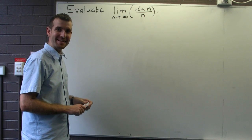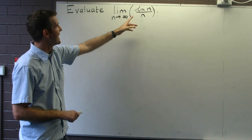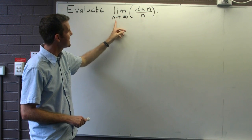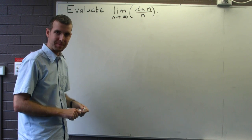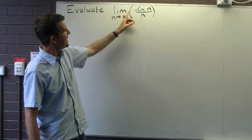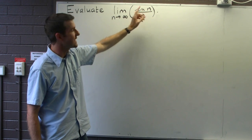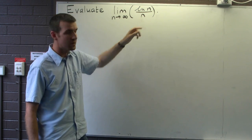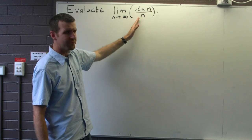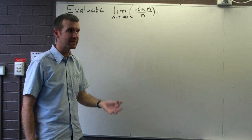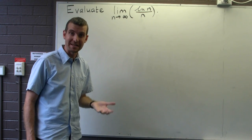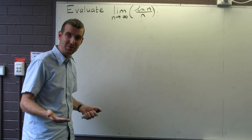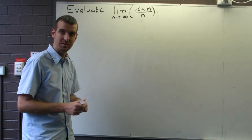Let's have a look at the limit of the following sequence. Our sequence is natural log of n divided by n, and we want the limit as n approaches infinity. If we evaluate the top part of our limit we get infinity; if we evaluate the bottom part we also get infinity. So we have what's known as an indeterminate form: infinity over infinity. This might be a finite number, it might be infinite — we just don't know. We need to perform a little more analysis on this problem to determine what's going on.